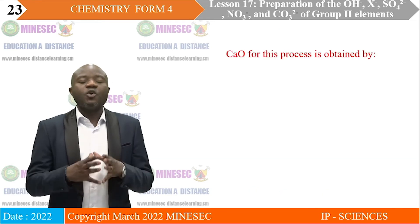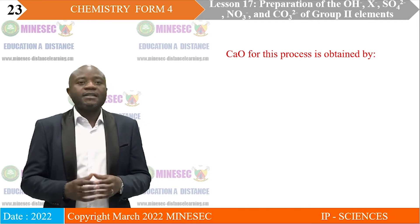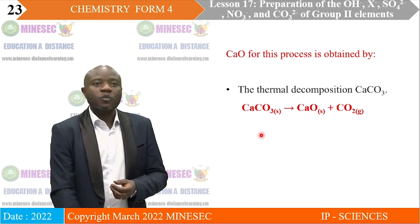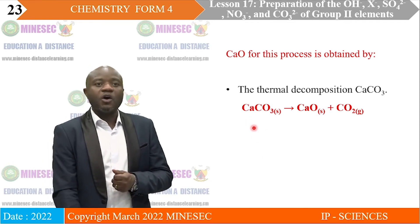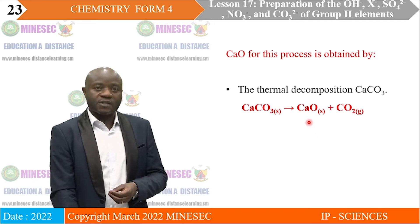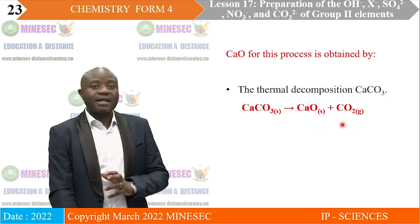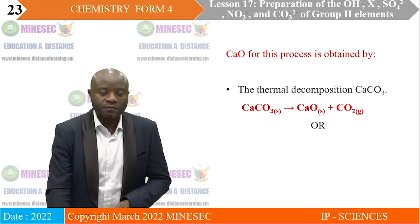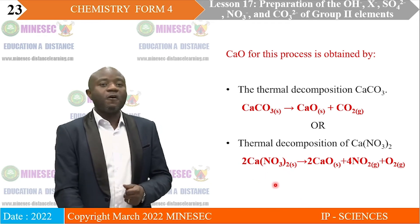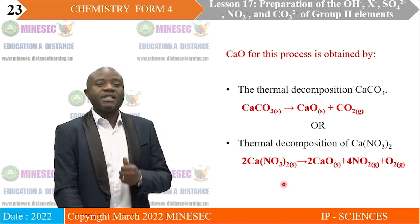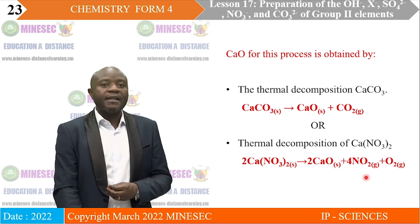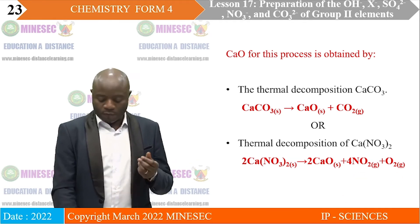To obtain the calcium oxide used to prepare calcium hydroxide, we carry out thermal decomposition on calcium carbonate — we heat calcium carbonate and it decomposes to produce calcium oxide, which we collect for the preparation of calcium hydroxide, while carbon dioxide is given off. Alternatively, we can also obtain calcium oxide by the thermal decomposition of calcium nitrate — solid calcium nitrate is heated at a high temperature, breaking down to form calcium oxide while nitrogen dioxide and oxygen are given off.